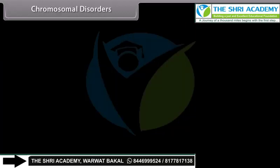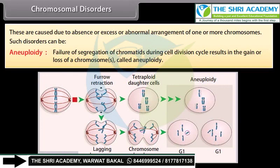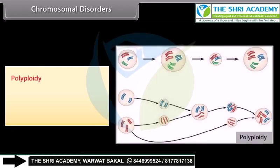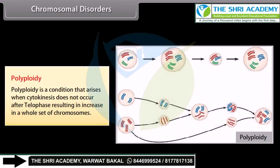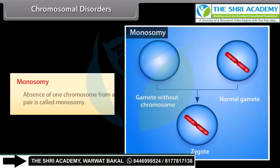Chromosomal disorders are caused due to absence, excess, or abnormal arrangement of one or more chromosomes. Aneuploidy: Failure of segregation of chromatids during cell division results in gain or loss of chromosomes. Polyploidy: Cytokinesis does not occur after telophase, resulting in an increase in a whole set of chromosomes. Trisomy: An extra copy of a chromosome. Monosomy: Absence of one chromosome from a pair.